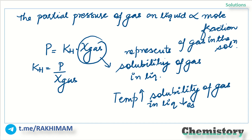That is why aquatic animals prefer to stay in cold water. They are more comfortable in cold water because cold water has a higher level of dissolved oxygen. Nowadays, because of the greenhouse effect and pollution, the temperature of our seas is rising, which is causing problems for aquatic animals because the dissolved oxygen level in water is now decreasing.